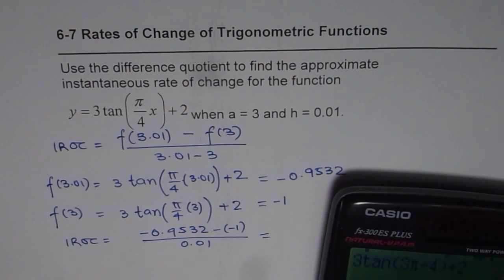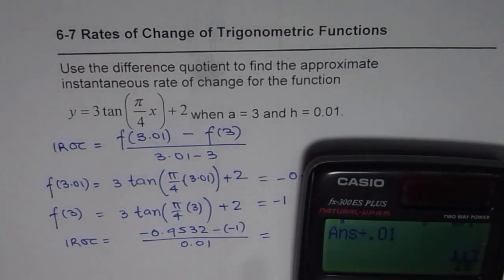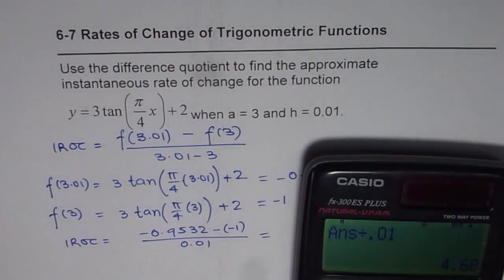So we have minus 0.9532 plus 1 divided by 0.01 equals 117 by 25, 4.68 in decimals.